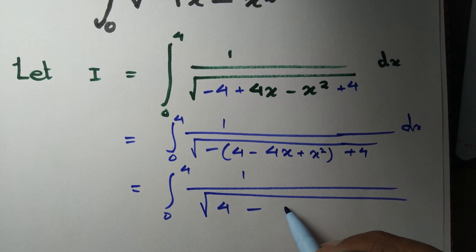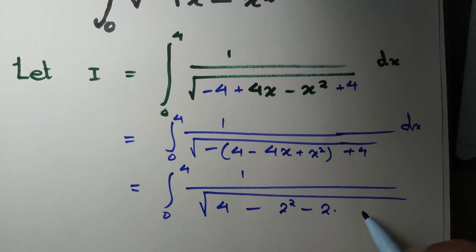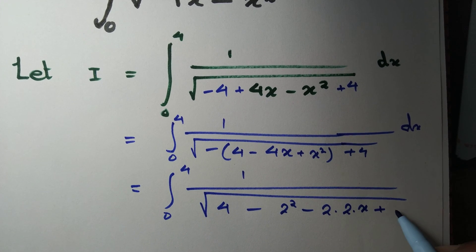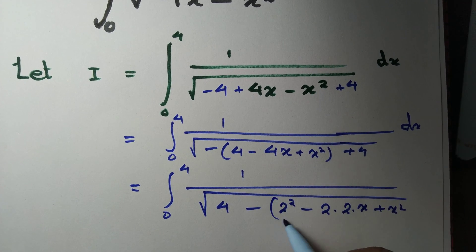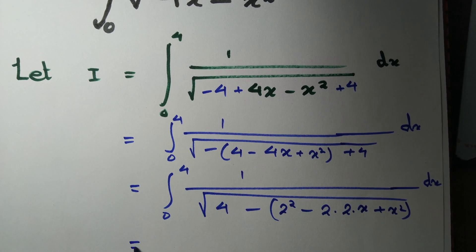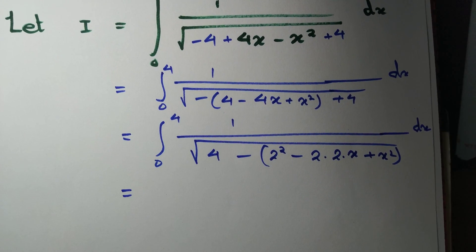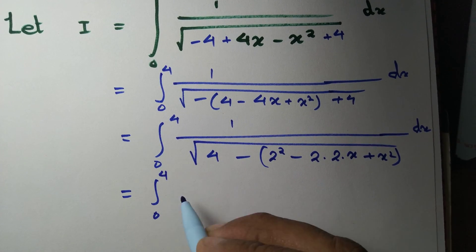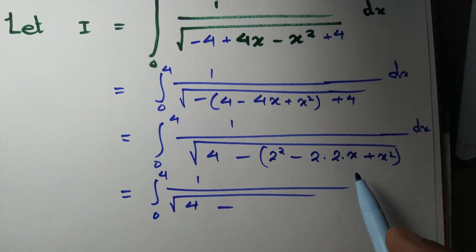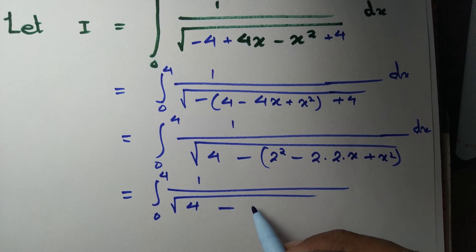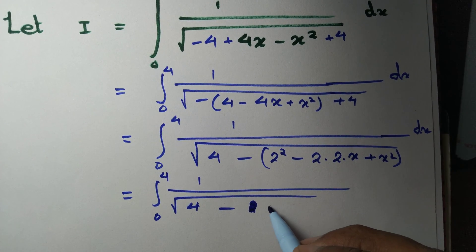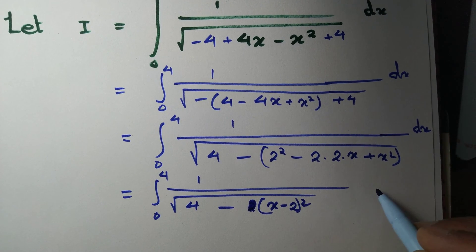Observe that x squared minus 4x plus 4 can be written as 2 squared minus 2 times 2 times x plus x squared, which is the form a squared minus 2ab plus b squared. This equals (2 minus x) squared, or equivalently (x minus 2) squared.